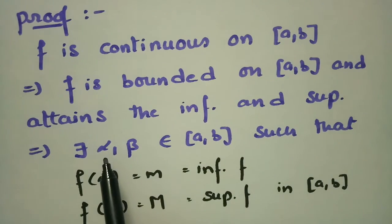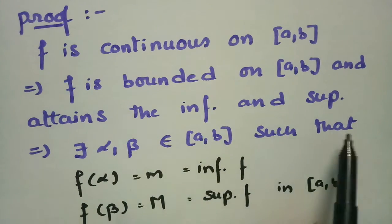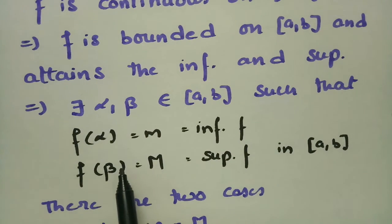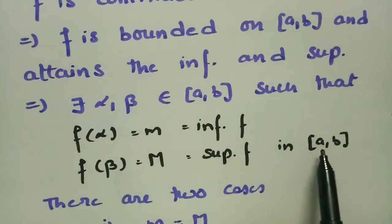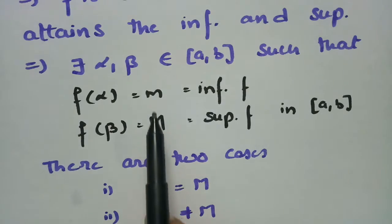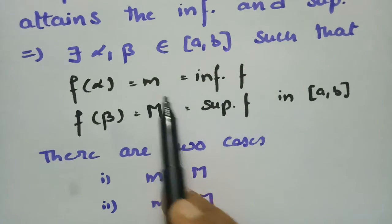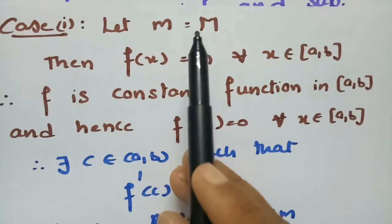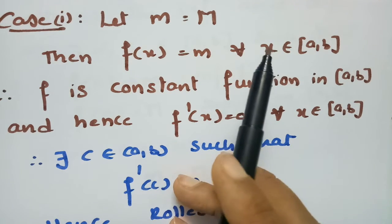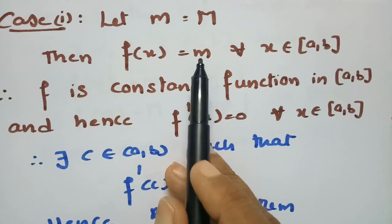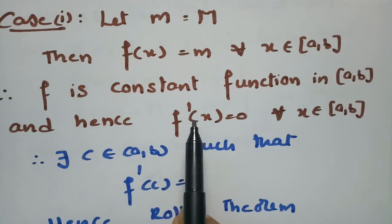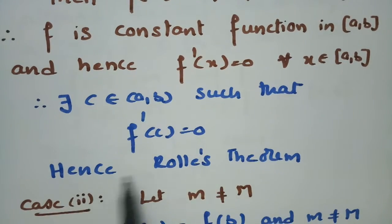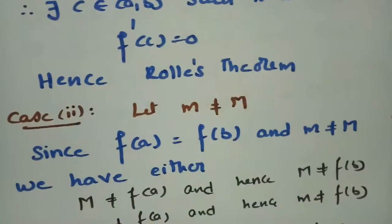By a previous theorem, if f is continuous on closed [a,b] then f is bounded and attains its infimum m and supremum M at points α and β in [a,b]. There are two cases: either m = M, giving a constant function with f'(c) = 0 for all c in (a,b) and Rolle's theorem follows, or m ≠ M.